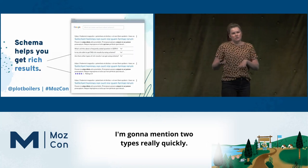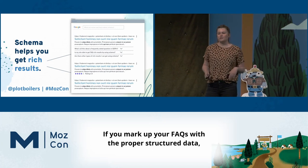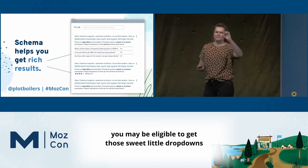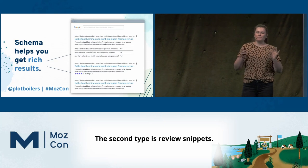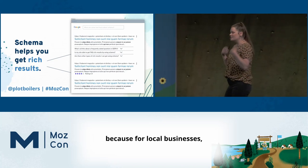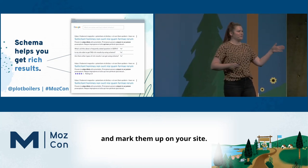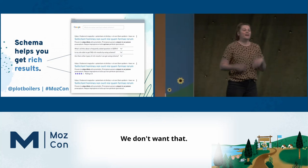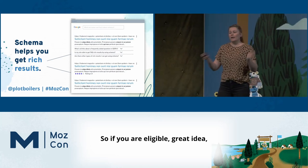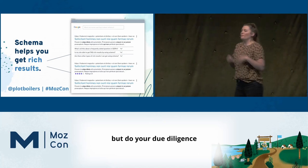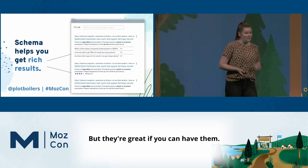Schema also helps you get rich results. Two types to mention quickly: first, FAQ rich results — if you mark up your FAQs with proper structured data, you may be eligible to get those drop-downs underneath your search result, which is a great way to take up space on page one. The second type is review snippets, which are a little tricky for local businesses because they're considered self-serving. Do not take all your Google reviews and mark them up on your site. Really, the only time a local or multi-location business could use this is if you are marking up a product. Do your due diligence and make sure you are actually eligible.